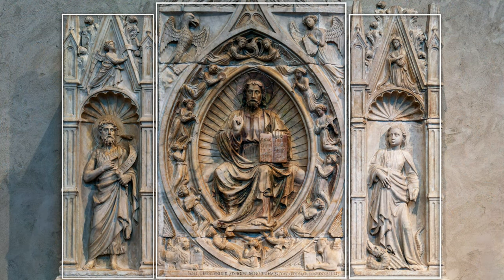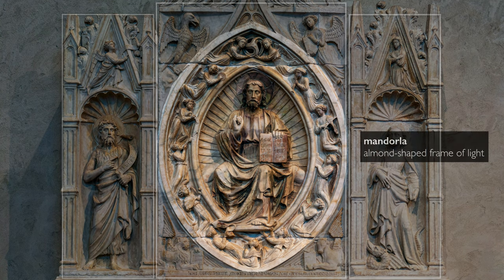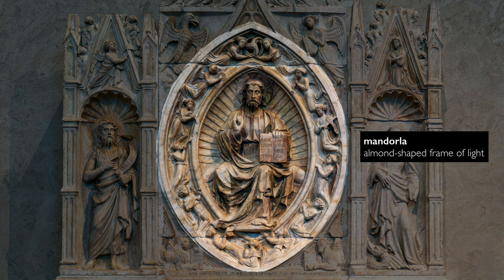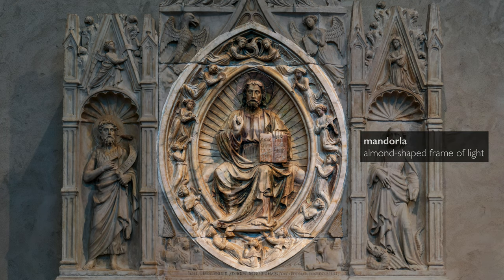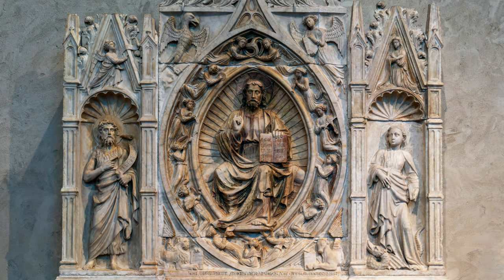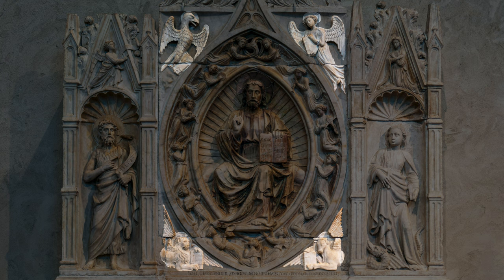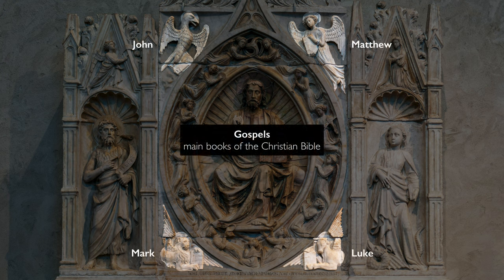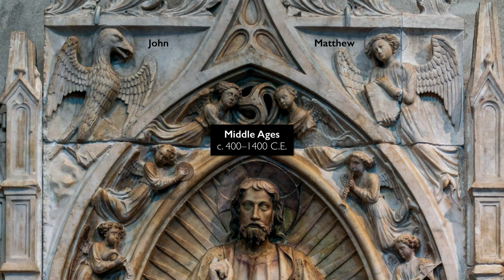This is a three-part altarpiece with Christ in the center, seated in a mandorla, surrounded by angel musicians playing music in the heavens. Just outside of that mandorla we see the symbols of the four evangelists — Matthew, Mark, Luke, and John — the authors of the four gospels, the main books of the Christian Bible. Together they tell us the story of Christ's life, miracles, and death, and this is why they are such common symbols in the Middle Ages.